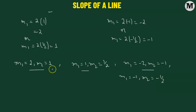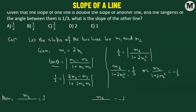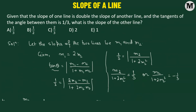So the possible slope pairs are: m1 equals 2 and m2 equals 1; m1 equals 1 and m2 equals 1 half; m1 equals negative 2 and m2 equals negative 1; or m1 equals negative 1 and m2 equals negative 1 half. Looking at the answer options, we can see that 1 half, 2, and 1 are all possible values of the slope.